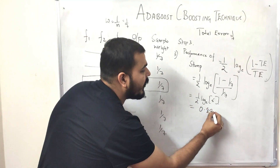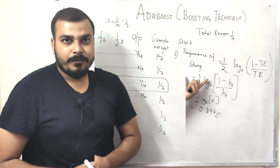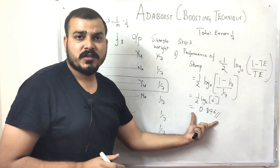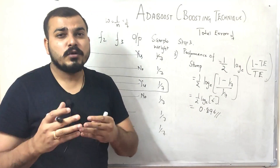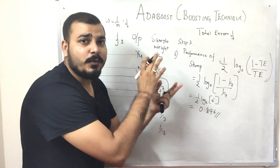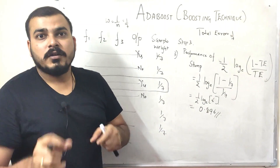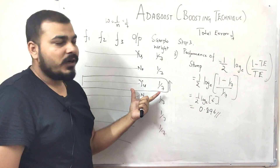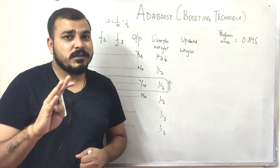You may be wondering why we calculated total error and the performance of the stump. It is because we need to update the weights. In the boosting technique, only the wrongly classified records from stump 1 get passed to the next stump. To ensure that, we increase the weights of incorrectly classified records and decrease the weights of correctly classified records.